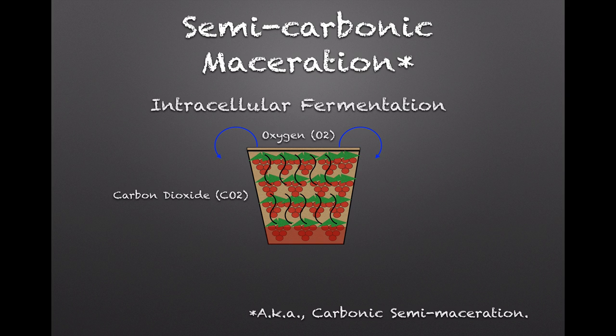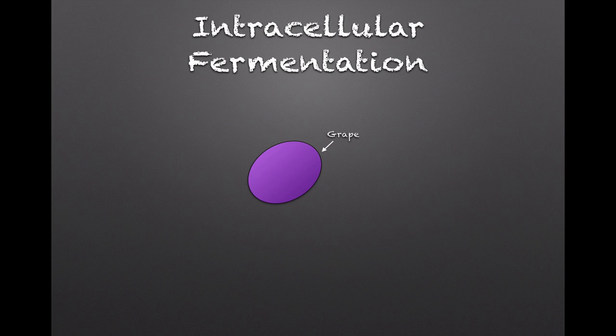It's in this kind of environment that a different type of fermentation, called intracellular fermentation, takes place. Starting with the red grape: if we peel the skin back, you can see that the pulp of most red grapes is clear-colored, and if you crush grapes like this, the juice that runs out will also be clear. What gives red wine its color is extended contact between the released juice and the skin of the grape, a process called maceration.